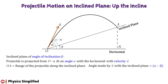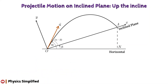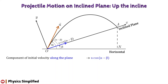Considering point O as the origin, we take the positive x-axis along the inclined plane and up the incline. The positive y-axis is considered perpendicular to the inclined plane in the upward direction. Let us now resolve the initial velocity vector of the projectile into two rectangular components. The component of the initial velocity along the incline is u cos(α−β), and the component perpendicular to the inclined plane is u sin(α−β).